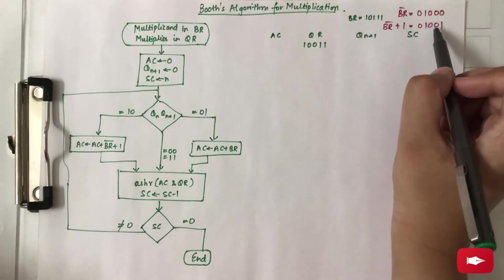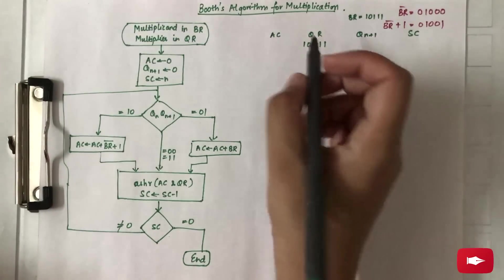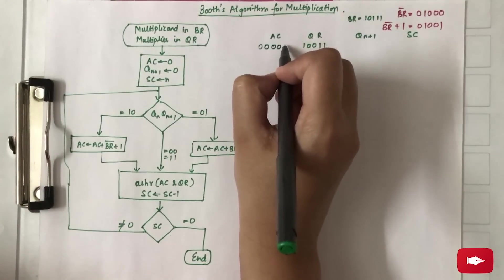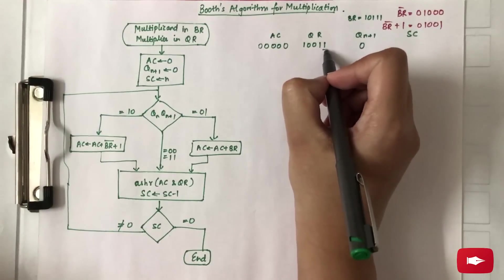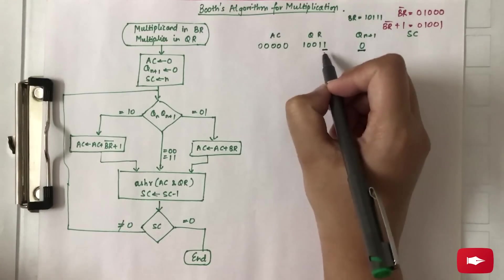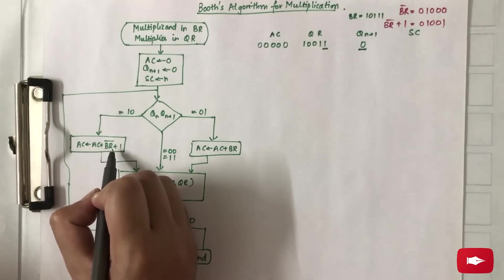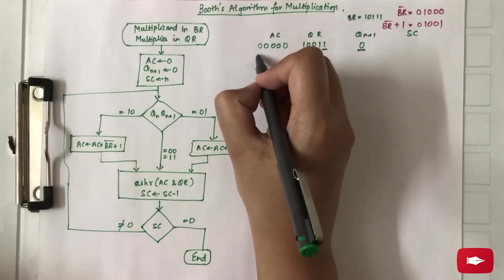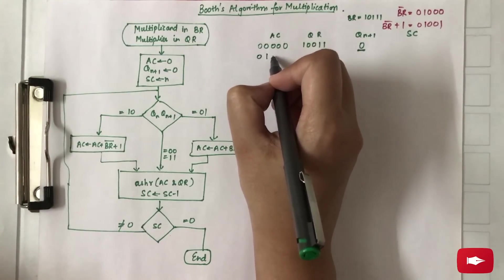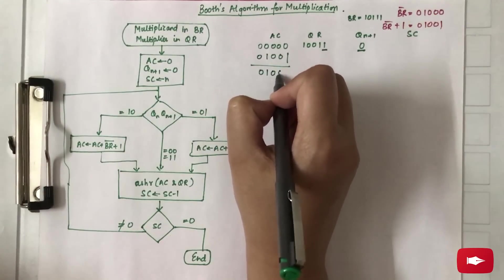Because we need the complement of B_R, we have already found the one's complement and two's complement and kept them ready for computations. Initially, A_C is 0, Q_R has the value 100111, and Q_N+1 is also 0. Checking Q_N and Q_N+1, it is 1,0 — that means subtraction. So A_C has to be added to the two's complement of B_R, which is 01001. Adding 01001 to A_C, we get the result 01001.